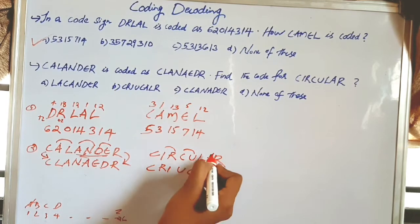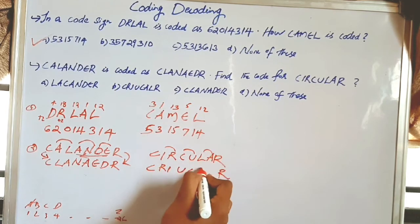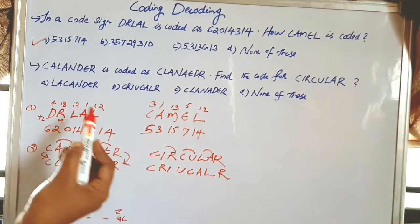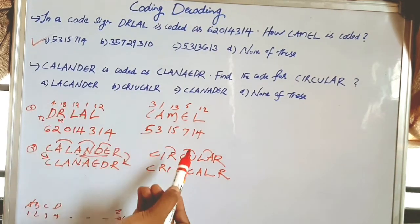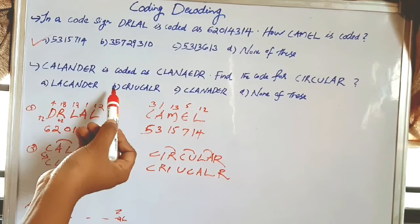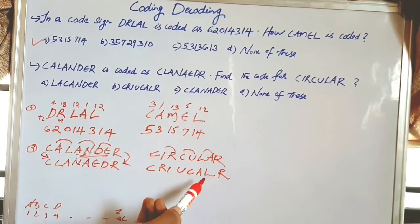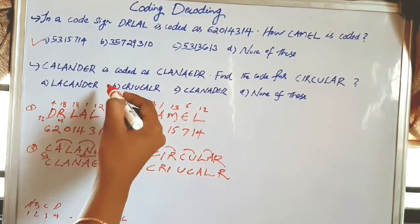For example, taking the letters and applying the rearrangement pattern, the answer for CIRCULAR is Option B: CRIUCALR.